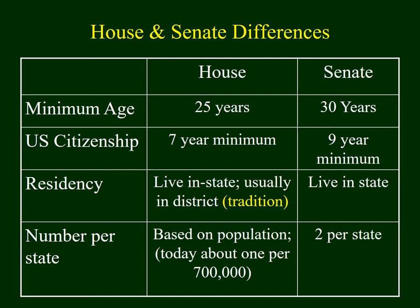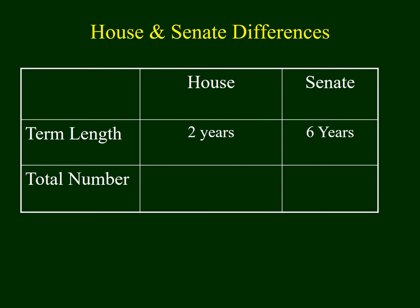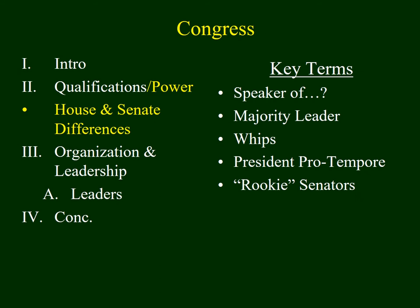The Constitution requires that the number of House members is based upon each state's population. Every state gets at least one, and others are added based upon the number of people who live there — today it's one for about every 700,000 people. For the Senate, there are two senators per state. House members have a term length of two years; it's six years for the Senate. The total number of House members has been 435 for the last 100 years, and with 50 states, we have 100 senators today.